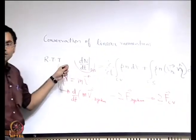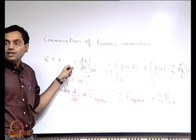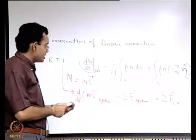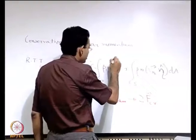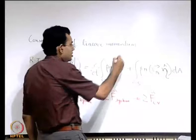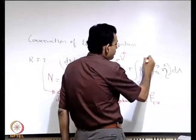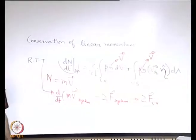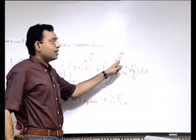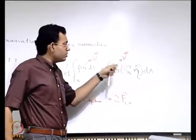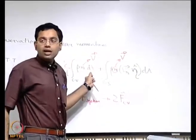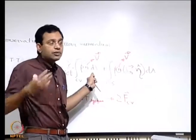The left hand side essentially becomes the resultant force acting on the control volume. The right hand side we can express by writing what is small n — small n is capital N per unit mass. So this is V, and this is also V. Very important observation: this V is in a reference frame which is stationary. We have considered a stationary reference frame here, but we will see later on that it is not necessary to have a stationary reference frame.